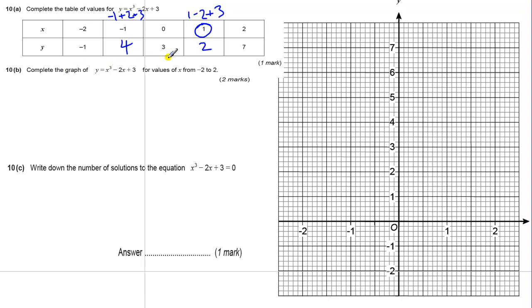So complete the graph of that. You've got a graph set out here with the axes. To complete the graph, you need to plot the points and draw the curve between them. So if we start at minus 2, minus 1, that's going to be here. And then the next point is minus 1, 4, which is up here. And then we've got 0, 3, which is there. And then we've got 1, 2, which is here. And then we've got 2, 7, which is here.